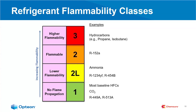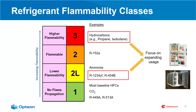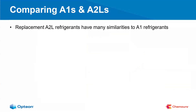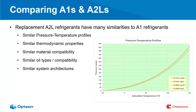The industry has spent over the last decade trying to safely enable the broader use of A2L and A3 refrigerants, transitioning from smaller charge applications historically used in domestic refrigerators or window units into larger systems. A2Ls were really designed to do two things: mirror the performance of HFCs as closely as possible while also minimizing the risk associated with flammability. When you compare A1s and A2Ls, they have a tremendous amount of similarities — similar temperature-pressure profiles, similar thermodynamic properties, similar material compatibility, and they often use the same oil types and system architectures.